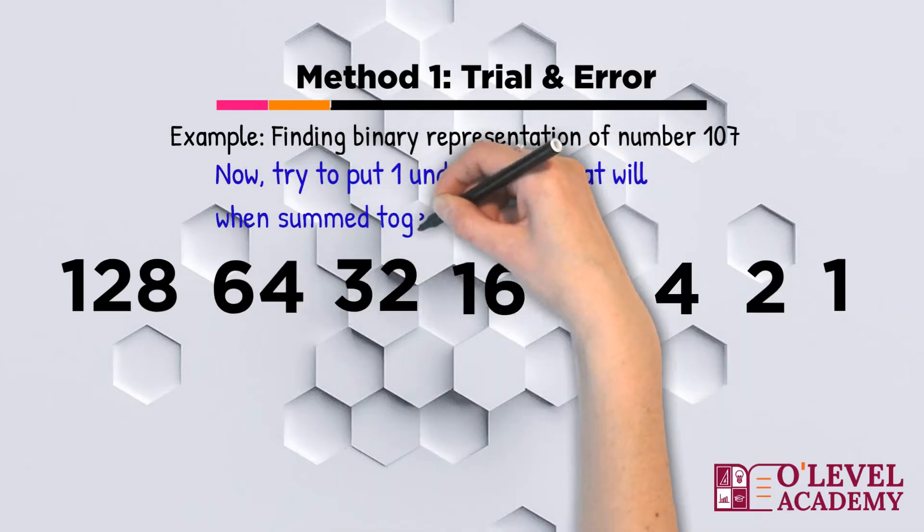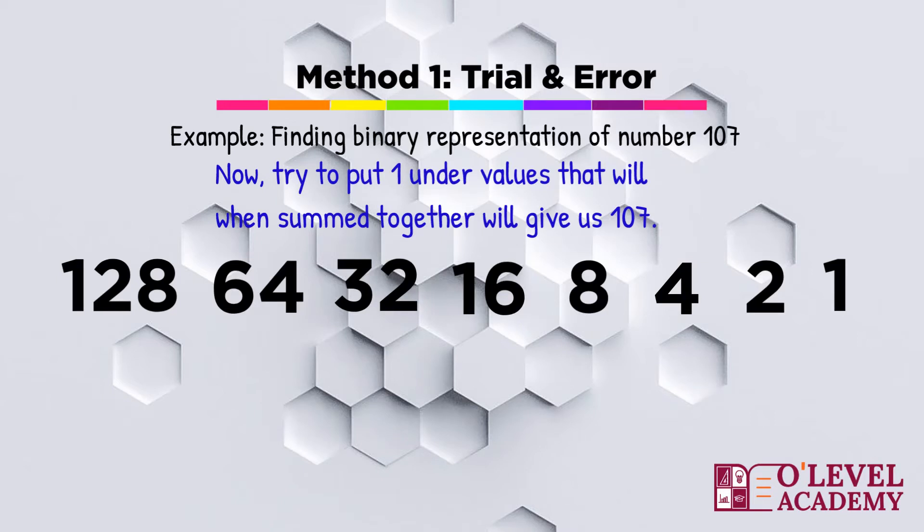Consider these 8 values as 8 switches. These switches can either be ON or OFF, that is they can have a value of 1 or 0. We will find out the value of 107's binary by keeping this concept in our mind.